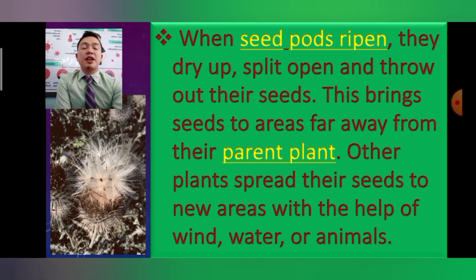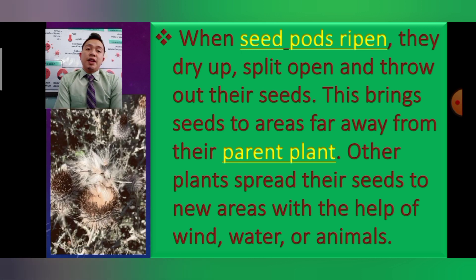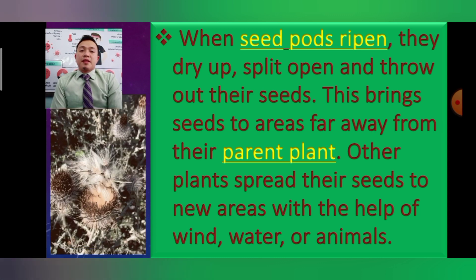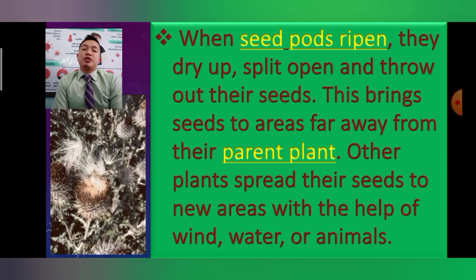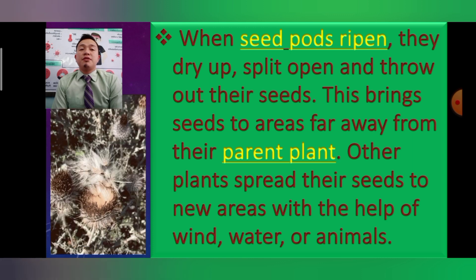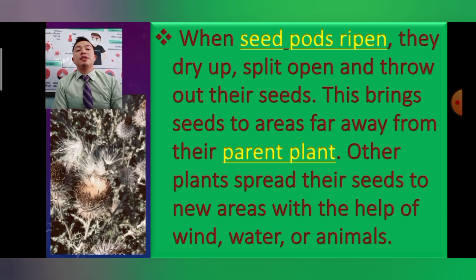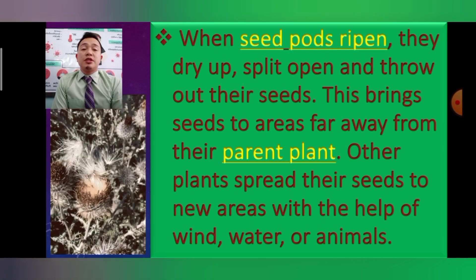The life cycle of the plant always starts from the seed. When the seed pods ripen, they dry up and split open and throw their seeds to the ground. Then germination starts — the seeds sprout and turn into a new plant, then from a new plant to an adult plant, and then it starts to produce new flowers again which turn into seeds. That is the process of the life cycle of a flowering plant.